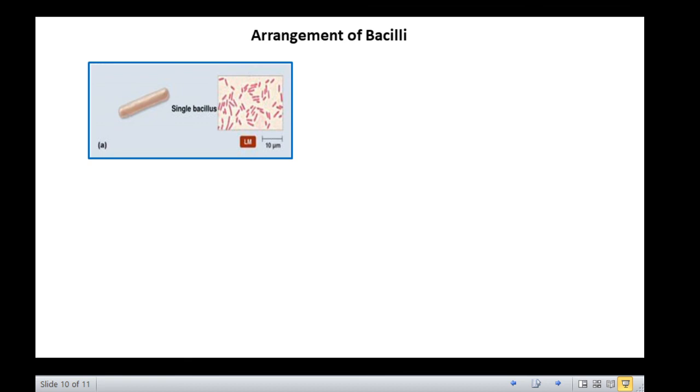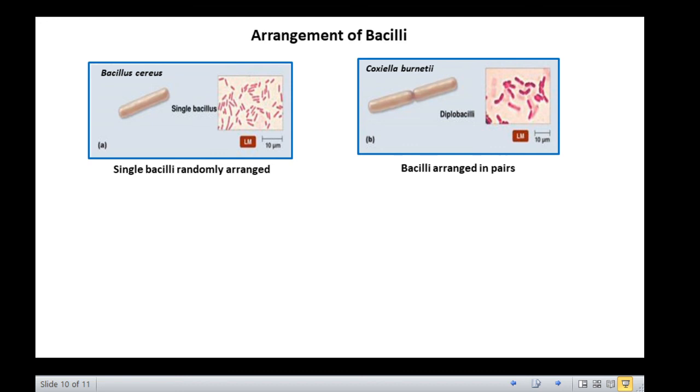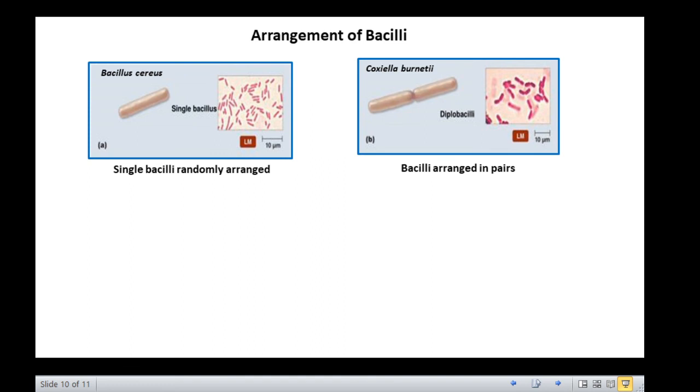Do the rod-shaped bacteria, i.e., bacilli, also exhibit these arrangements that we just saw for cocci? Yes, they do. Some bacilli do exist singly, as in the case of Bacillus cereus, and appear as random arrangement. However, some bacilli appear in pairs after division. Such bacilli are called diplobacilli. If the cells stick to each other after subsequent divisions in the same plane, they are called streptobacilli.